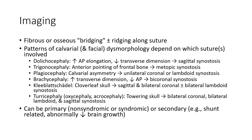Dolichocephaly shows increased AP elongation and decreased transverse dimension, associated with sagittal synostosis. Trigonocephaly shows anterior pointing of the frontal bone, associated with metopic synostosis. Plagiocephaly shows calvarium asymmetry, associated with unilateral coronal or lambdoid synostosis.